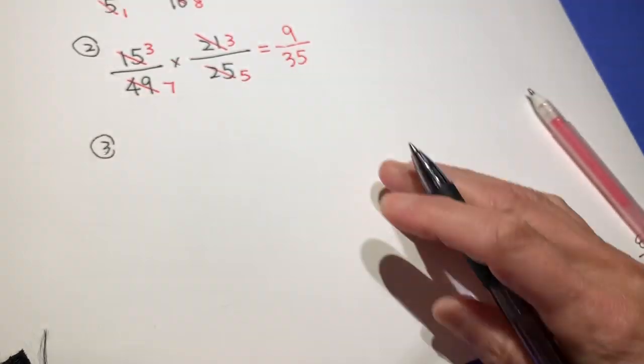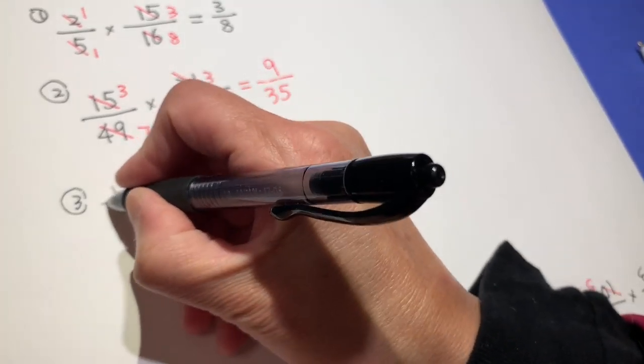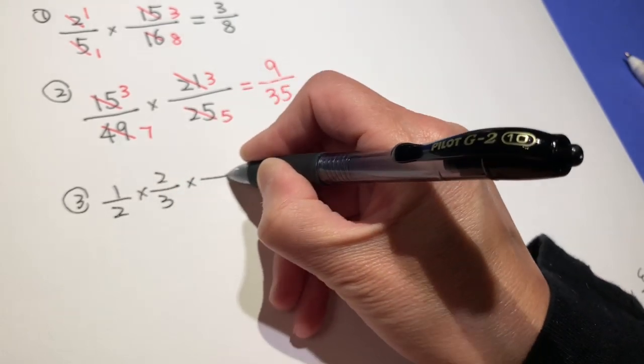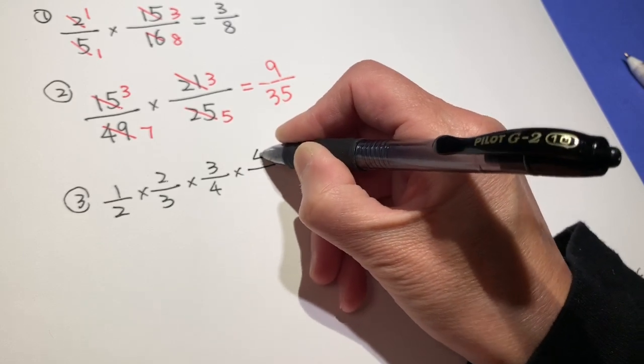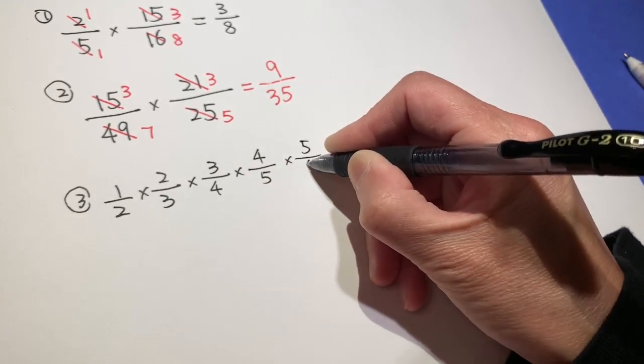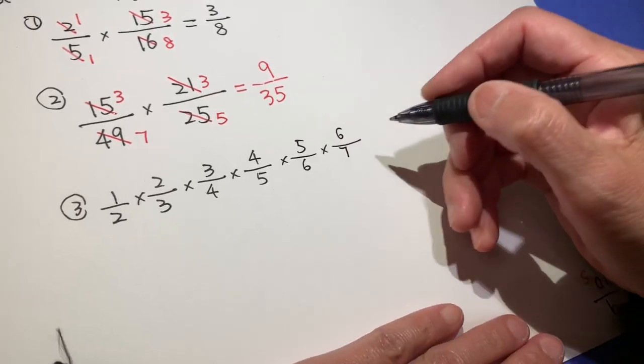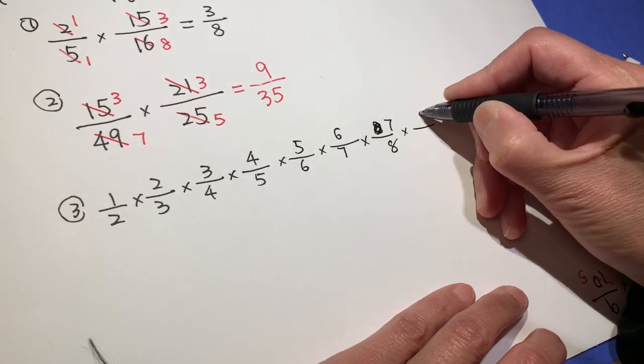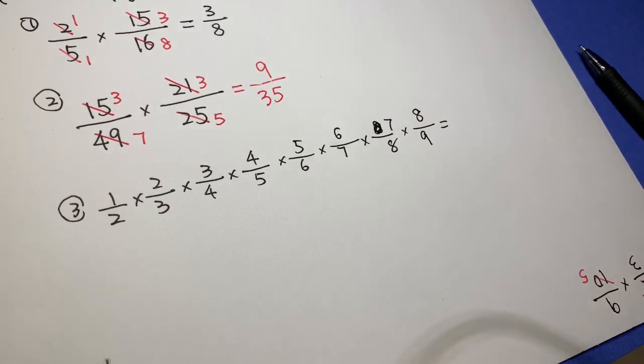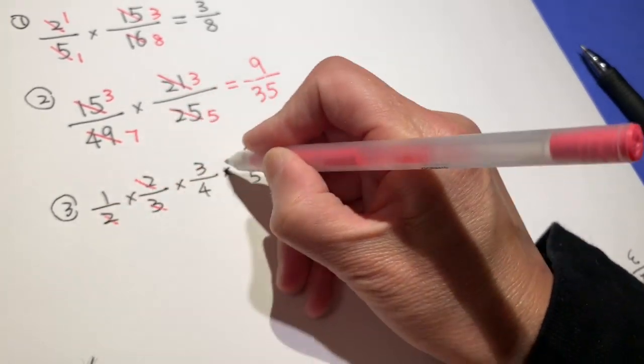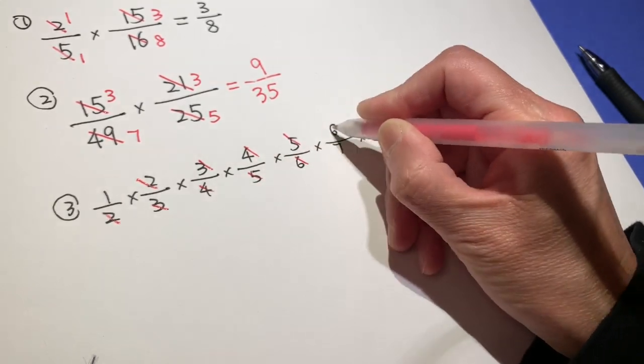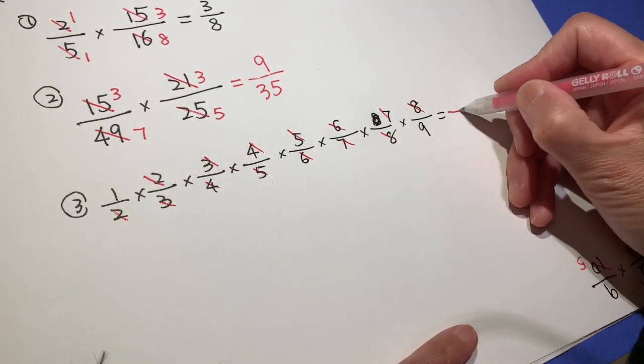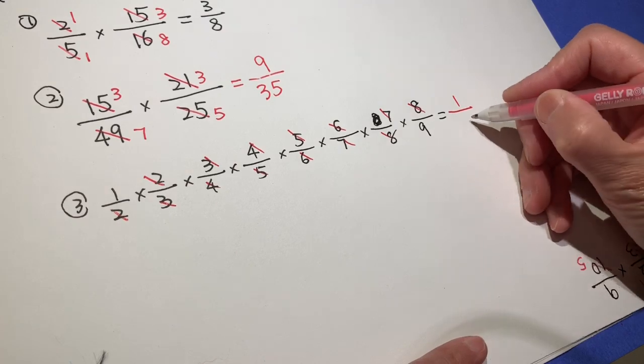Question number 3: 1 over 2 times 2 over 3 times 3 over 4 times 4 over 5 times 5 over 6 times 6 over 7 times 7 over 8 times 8 over 9. So we can cross-cancel. The last one standing on top is 1. The last one standing on the bottom is 9.